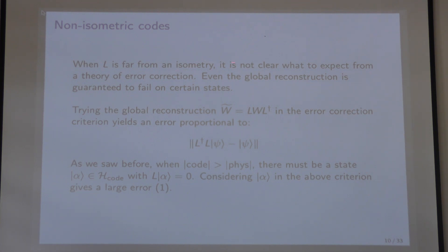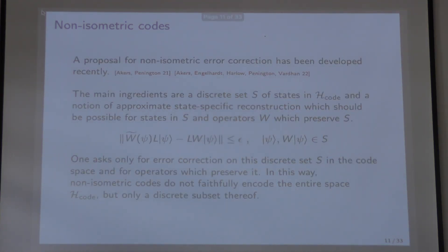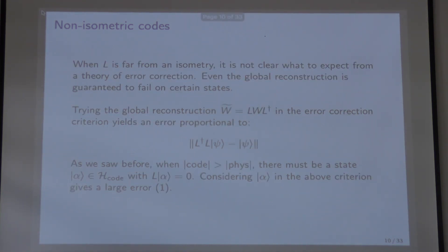Now when L is far from an isometry, it's not clear what to expect from error correction, because even the global reconstruction is actually guaranteed to fail on certain states. Trying the global reconstruction in the error correction criterion yields an error proportional to L†L - I. Now if L was an isometry, this would be zero. But when the code space is greater than the physical space dimension, there must be a state alpha in H_code which is annihilated by the encoding map, and considering alpha gives a large, order-1 error.